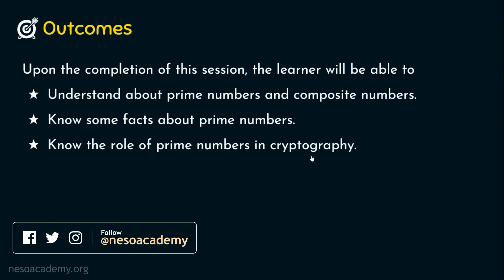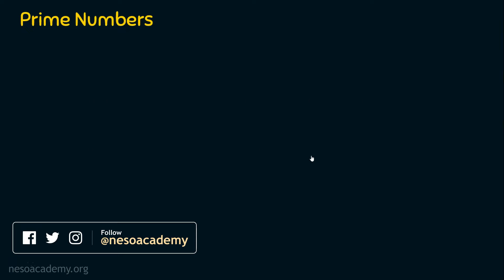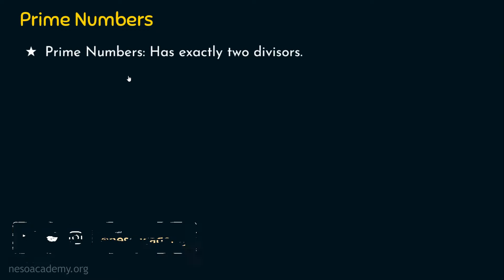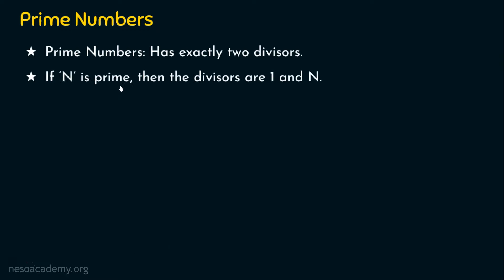Let's directly dive into the topic of the day: prime numbers. What is a prime number? Prime numbers are numbers that have exactly two divisors. If we have a number n, then that number n will have exactly two divisors. If the number n is prime, then the divisors are 1 and n only. So if n is a prime number, it can be divided by 1 and n only.